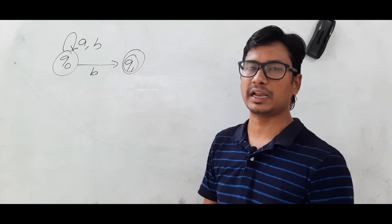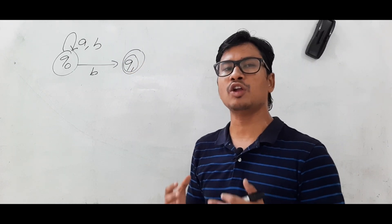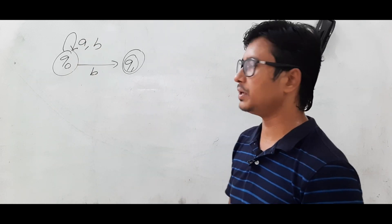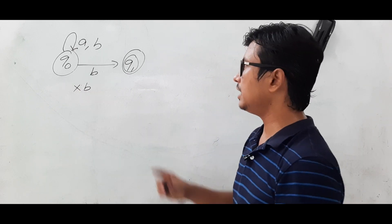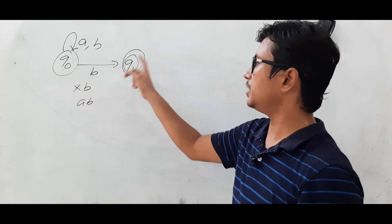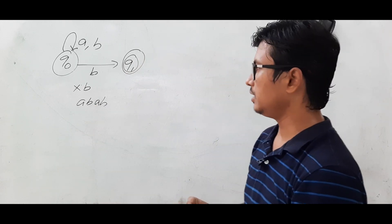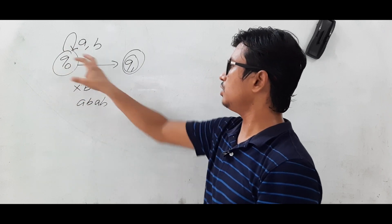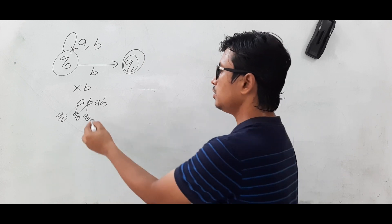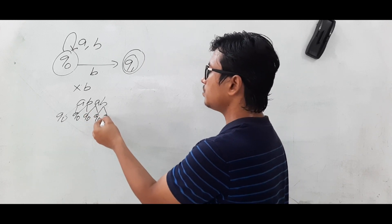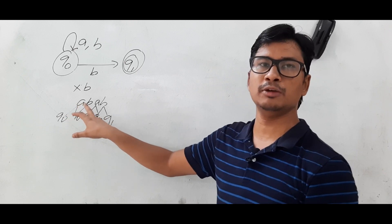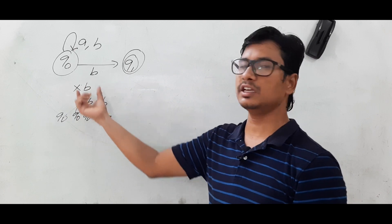Q1 on A and B has no transitions. Now I want to check what strings this NFA accepts. It can start with A or B but must end with B. Let's verify: for string ABAB — Q0 on A goes to Q0, Q0 on B goes to Q0, Q0 on A goes to Q0, Q0 on B goes to Q1 — a final state. So ABAB is accepted.